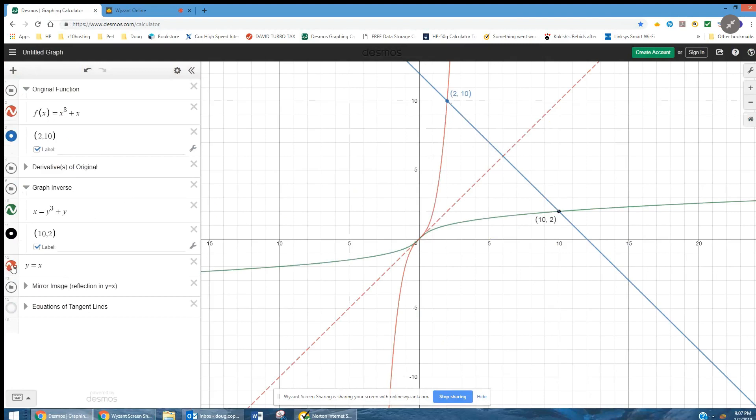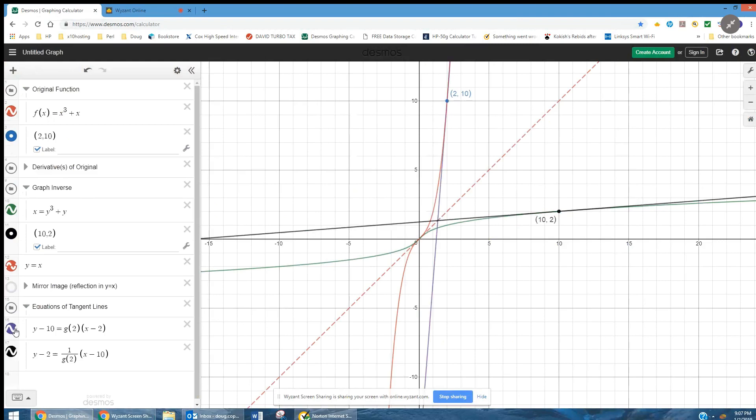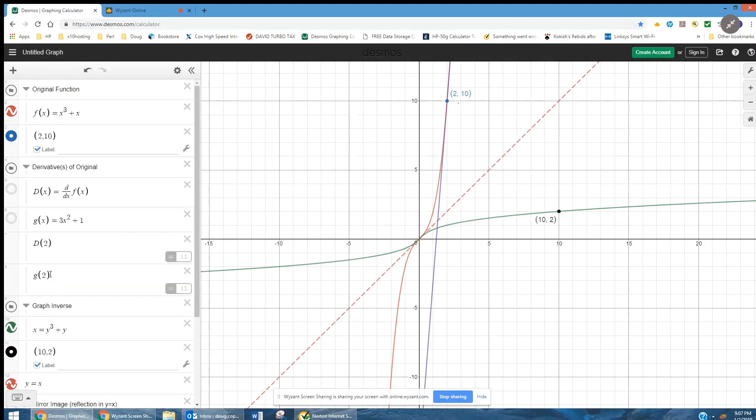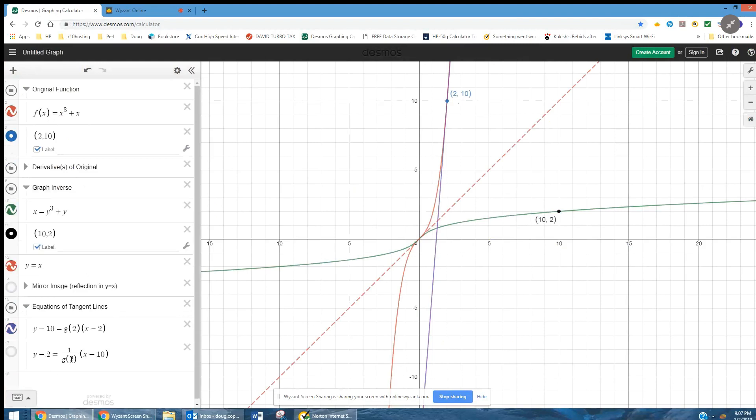So that kind of shows that we've got mirror image there. And the equations of the tangent line, the tangent line to the original function is looking like this. It has a slope of g of 2, which we saw was 13. So the slope of this line, this blue line right here is 13, passing through 2, 10. So I use the point slope formula.